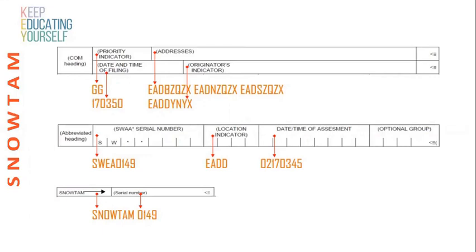There will be a SNOWTAM number. Sierra Whiskey means it's a starting office — any SNOWTAM number will come with Sierra Whiskey. ECO Alpha means it is the FIR which is issuing this particular SNOWTAM. Then the number will be four characters — for example, 0149.